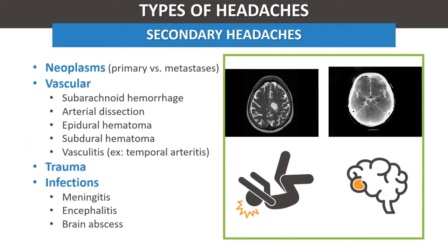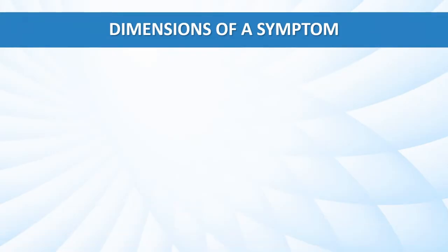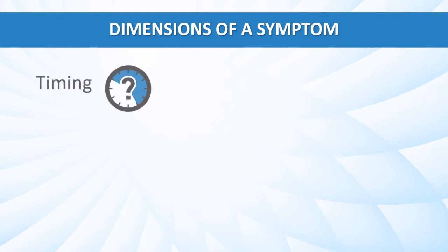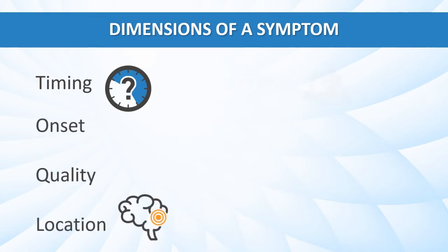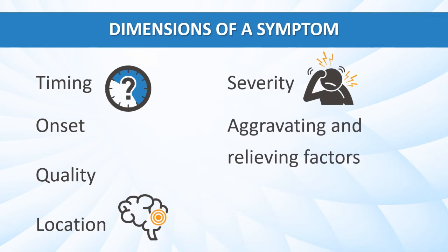When assessing a patient with a headache, we need to determine whether they have a primary headache disorder or secondary headaches due to an underlying medical condition. A thorough history can help to develop a differential diagnosis. It is important to clarify the seven dimensions including timing, onset, quality, location, severity, aggravating and relieving factors, and associated symptoms such as autonomic features, nausea, and photo and phonophobia.